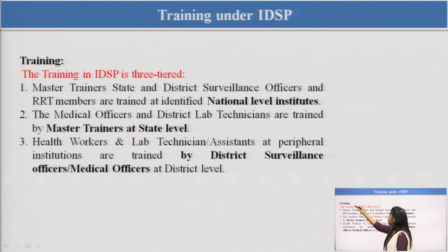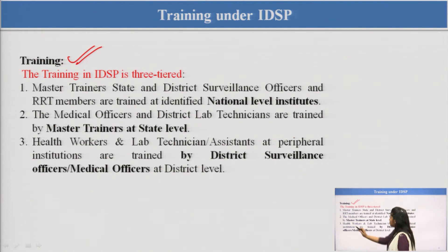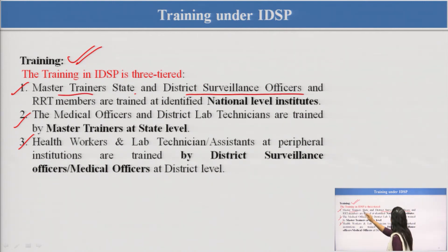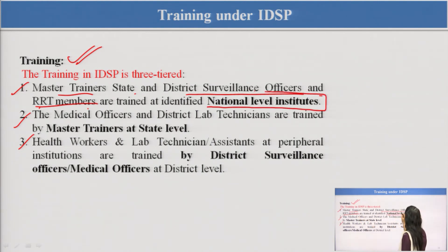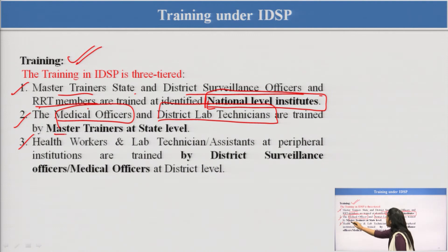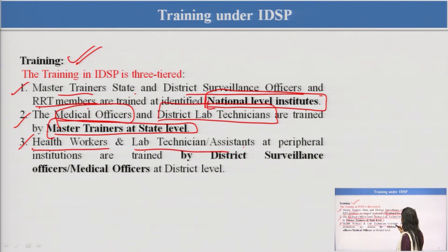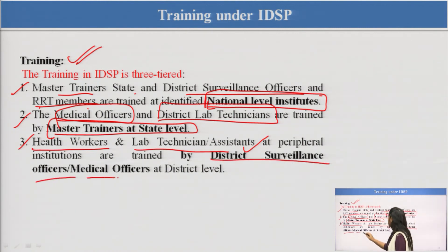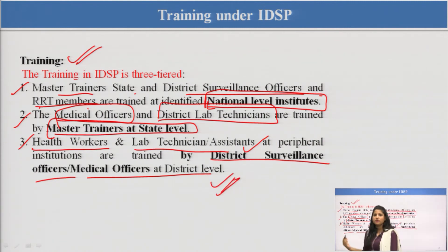Coming to the training part, under IDSP there is a three-tier system. First, master trainers, state and district surveillance officers, and RRT members are all trained by national-level institutes. Second, medical officers and district lab technicians are trained by master trainers at the state level. Third, health workers, lab technicians, and assistants are trained by district surveillance officers or medical officers at the district level — their training levels differ.